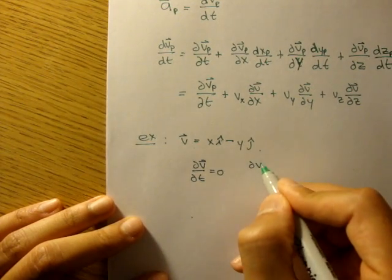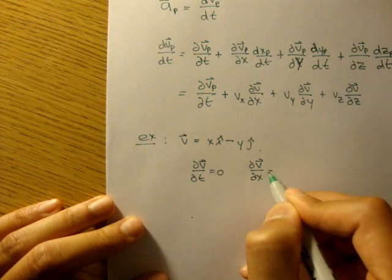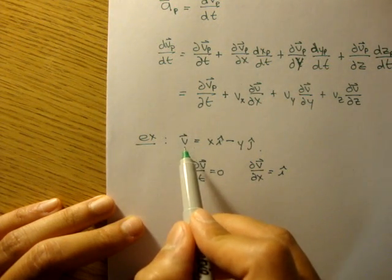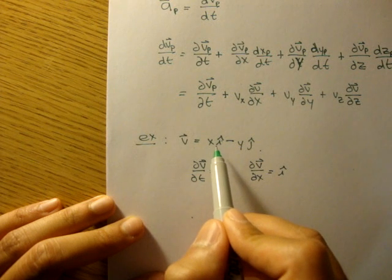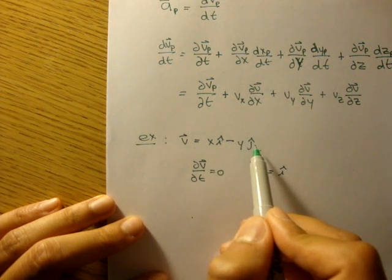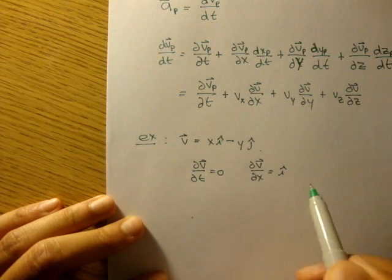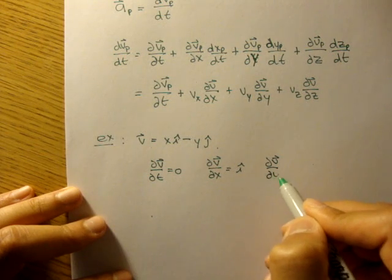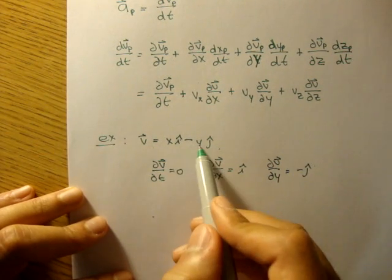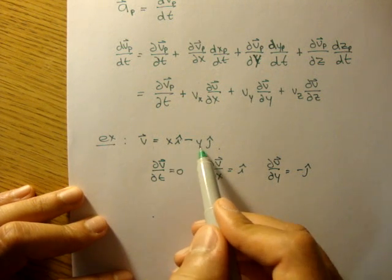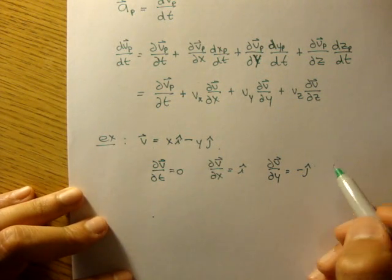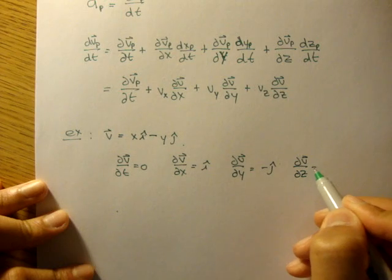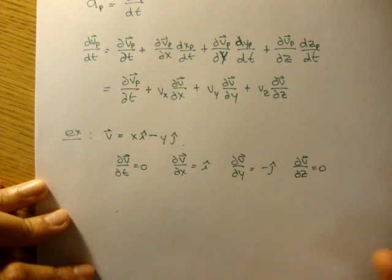We know the partial of v with respect to x is equal to i — if you differentiated the velocity with respect to x only, it would just give us i, and the other term would be held constant and differentiate to zero. The partial of v with respect to y is equal to negative j — you differentiate holding x constant and get negative j. And dv/dz is equal to zero, because there's no z term, no k term.